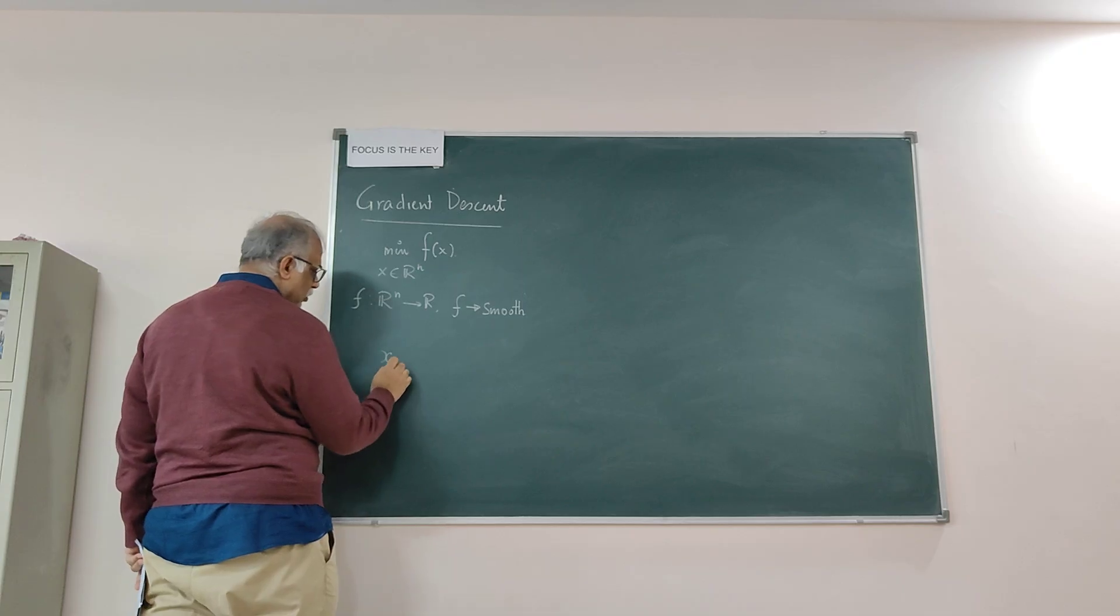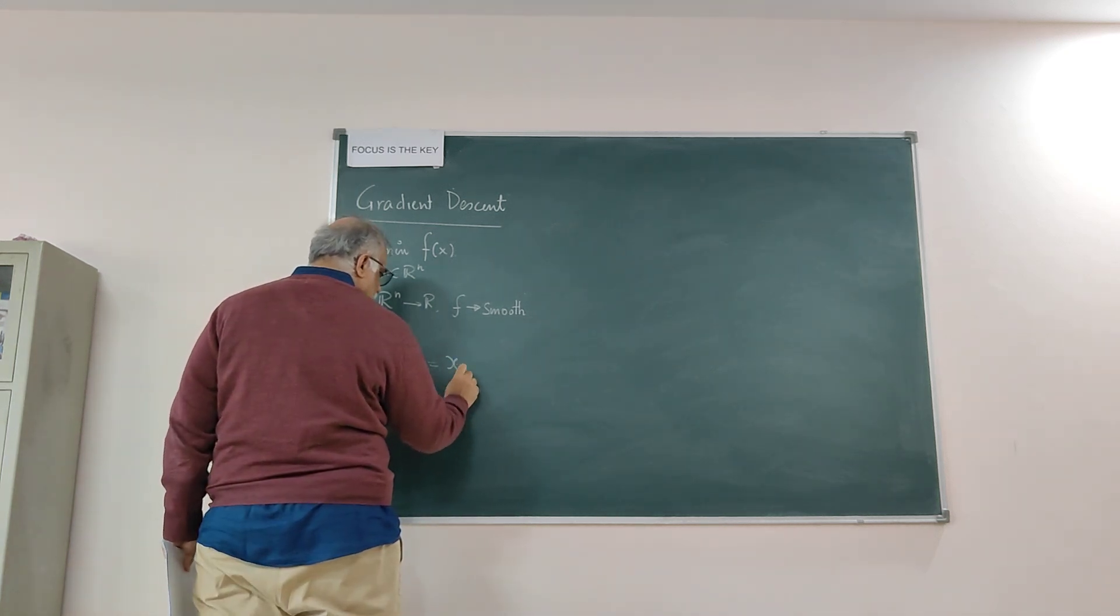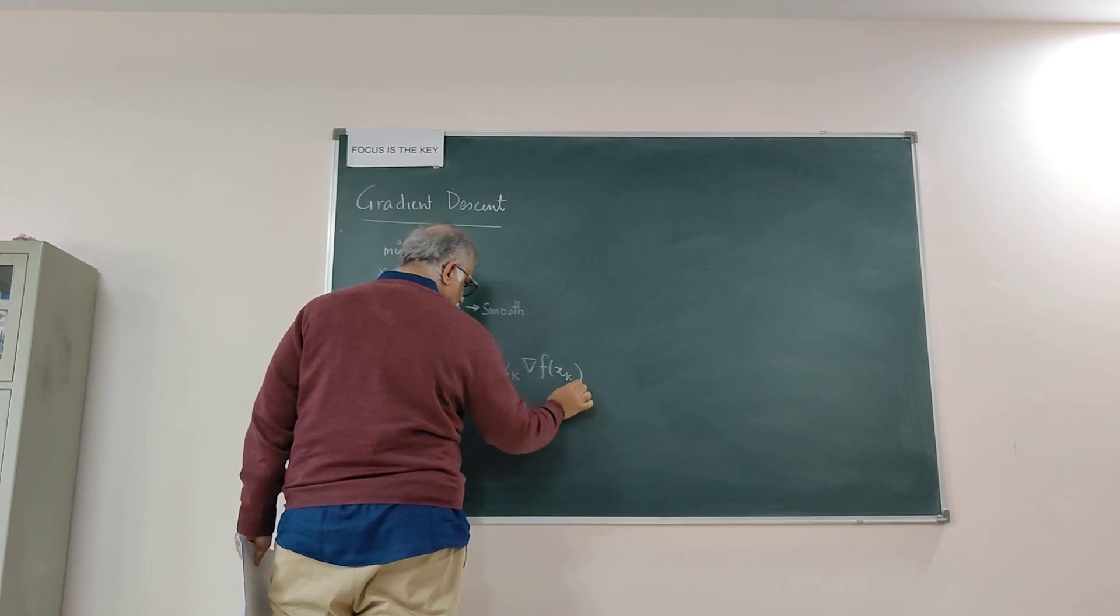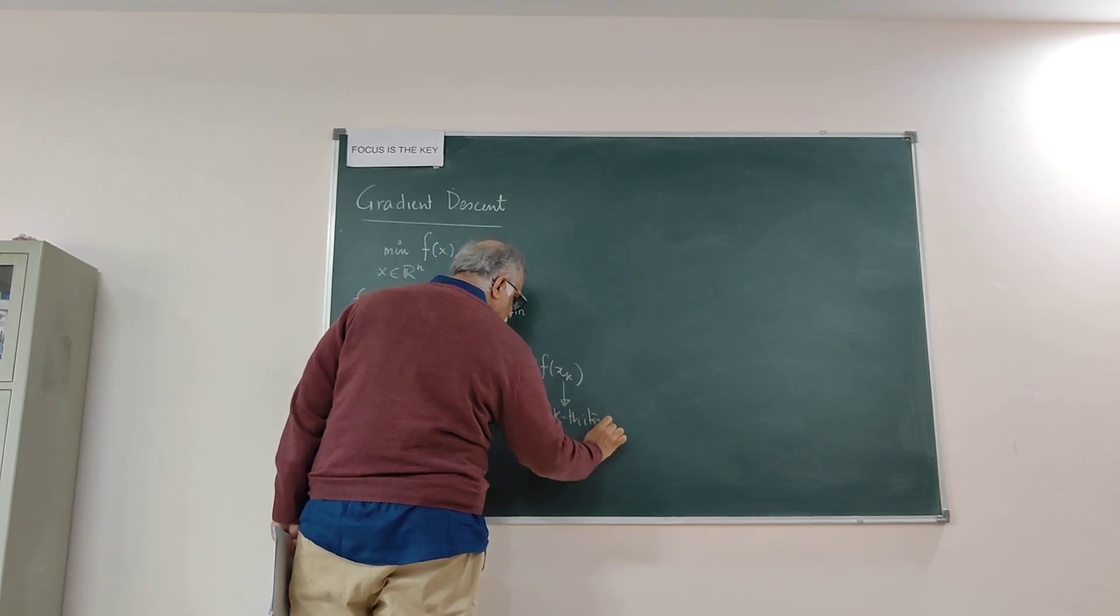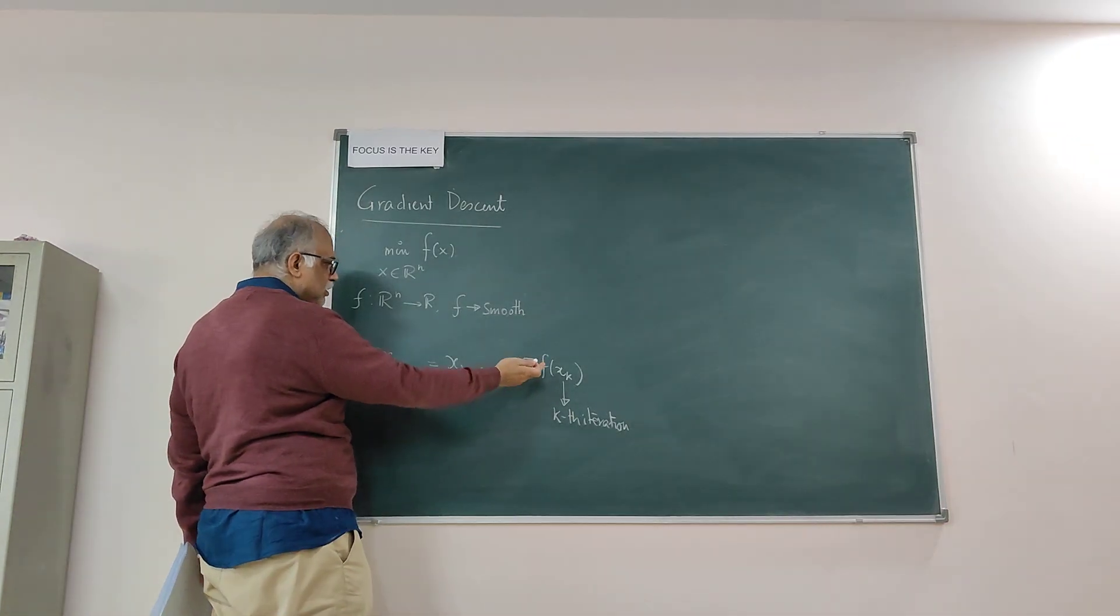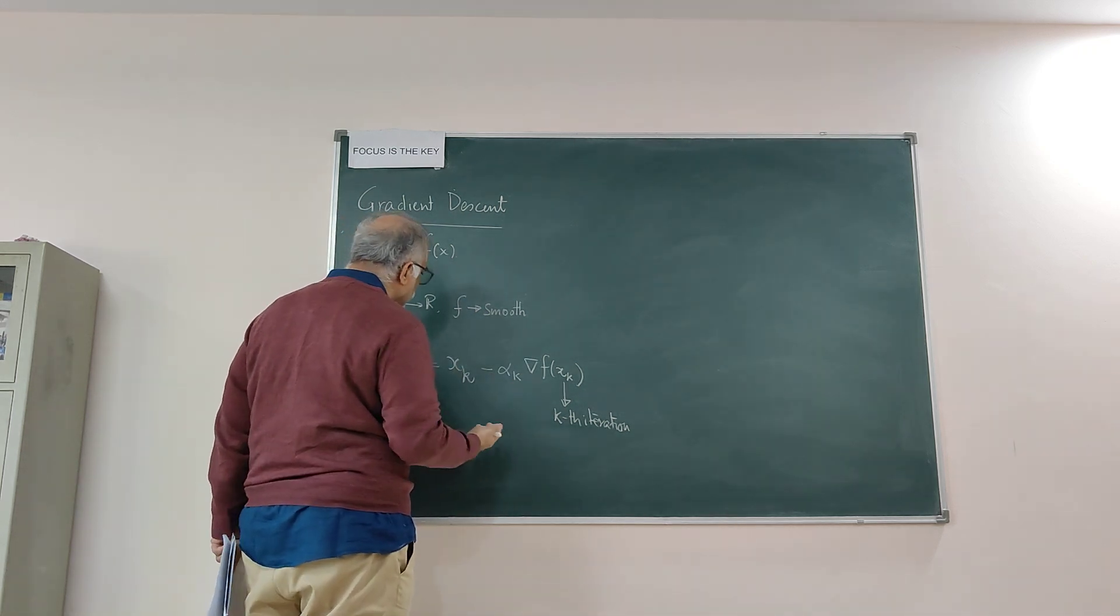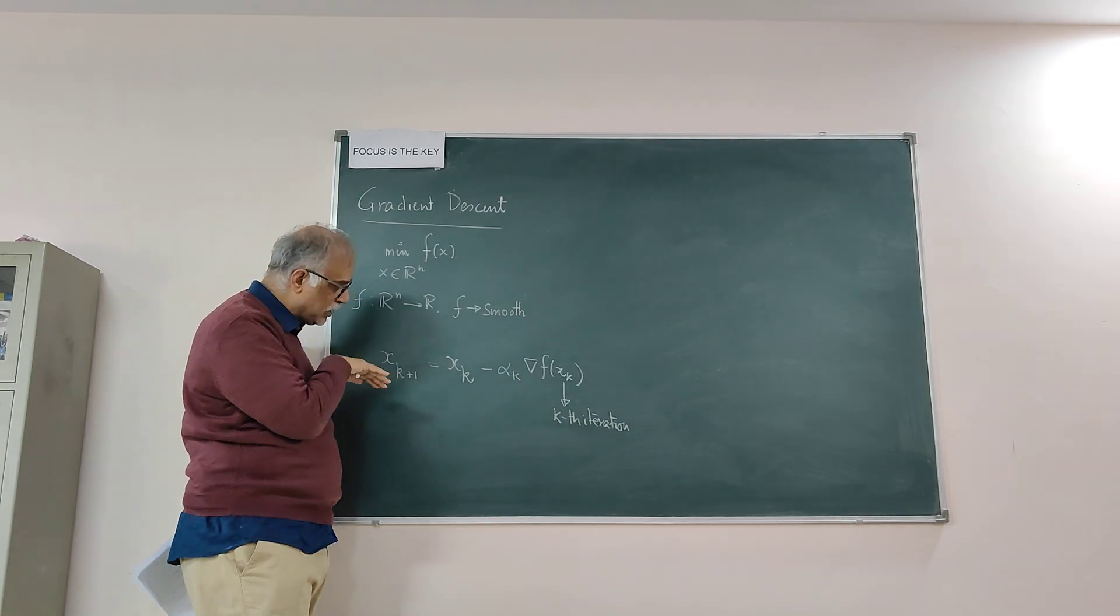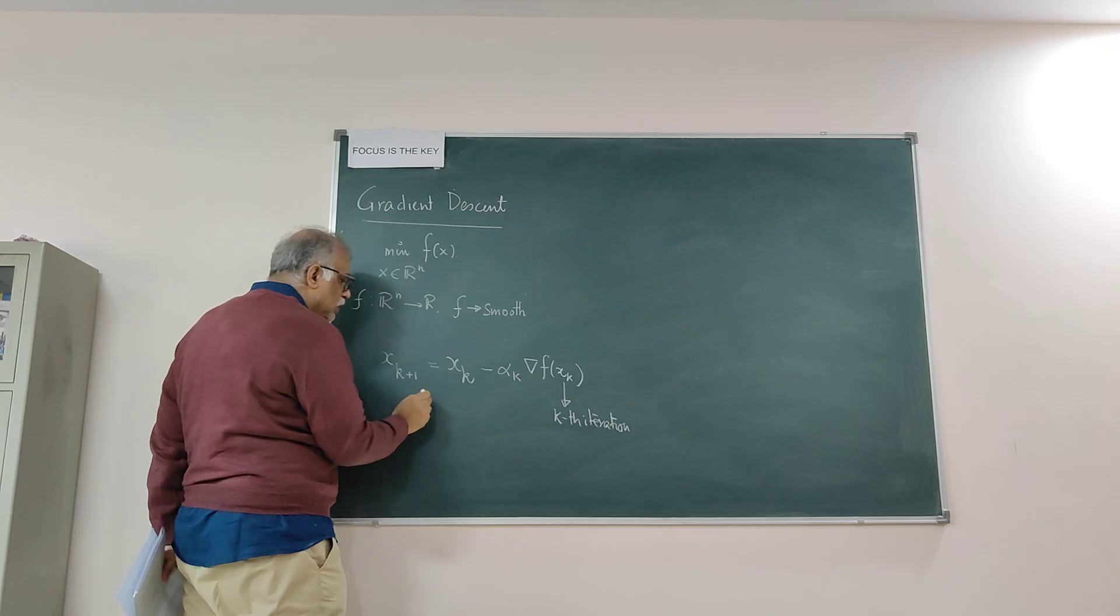The basic iterative scheme that we use is x_{k+1} = x_k - α_k ∇f(x_k). This is the kth iteration, which we check whether it really is a minimizer by checking whether it satisfies some optimality condition. If it is not a minimizer, we will improve it and come to the next point x_{k+1}. Usually we want the function value to decrease, but we need not do that every time. When we are decreasing the function value at every iteration, we call these monotonic methods. Otherwise, we call them non-monotonic methods.